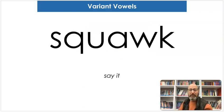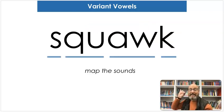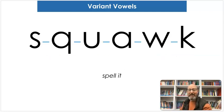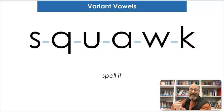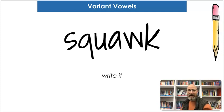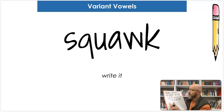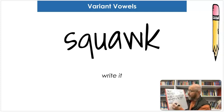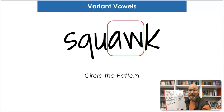Our next word is squawk. Say squawk. Map the sounds: S-Q-O-L-K. Squawk. Let's spell it: S-Q-U-A-W-K. Squawk. Squawk would be a sound a bird makes when they're screaming kind of loud — squawking. And let's write it: S-Q-U-A-W-K. What makes the "aw" sound? A-W. That's correct. Circle it.